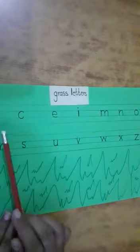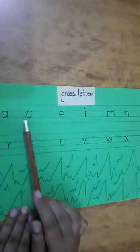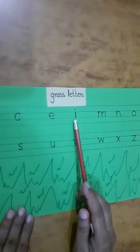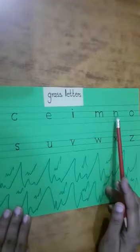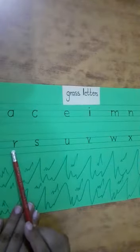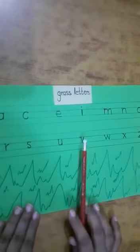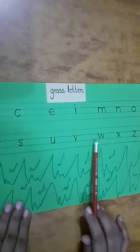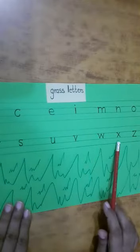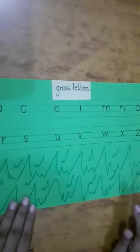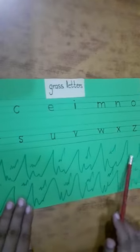Again. A, C, E, I, M, N, O, R, S, U, V, W, X, Z. These all are grass letters. These all are grass letters.